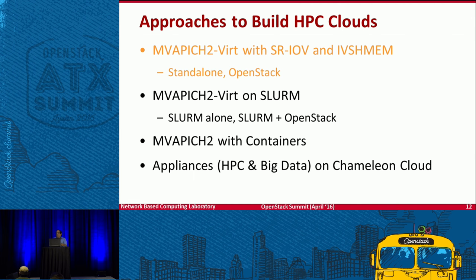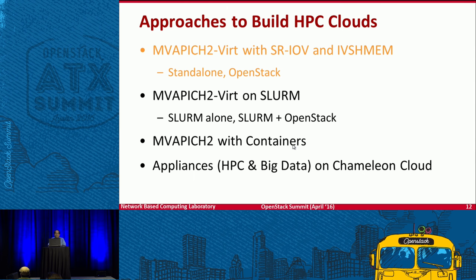Let me focus on the four directions we will cover today. The first is MVAPICH2 Virtualization — basic virtualization with SRIOV and IBSMEM — which can be used in standalone mode or OpenStack mode. Second, we will go into enhancements to a SLURM plugin approach so we can run our virtualization stack with SLURM efficiently. Third, MVAPICH2 with containers. Finally, we are creating appliances with these stacks available on the Chameleon testbed so end users can just click and proceed.